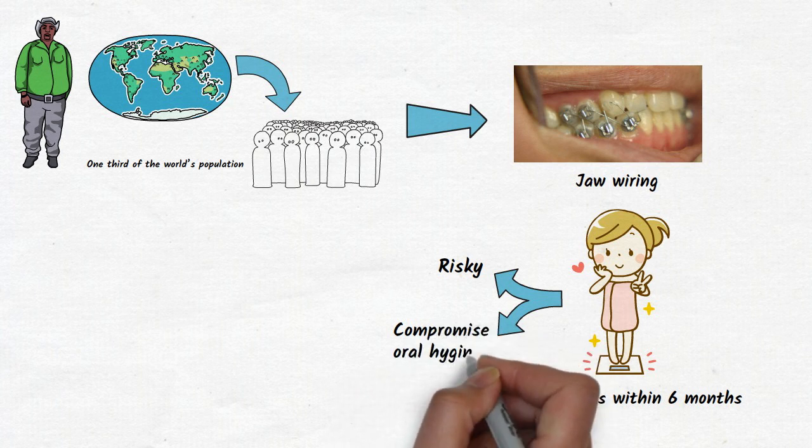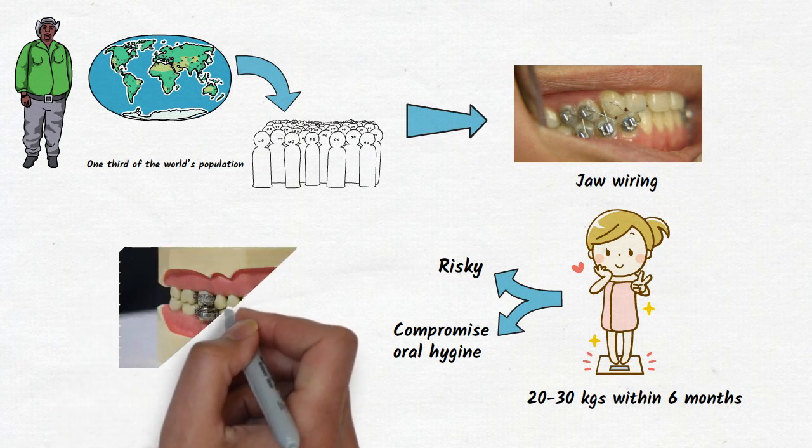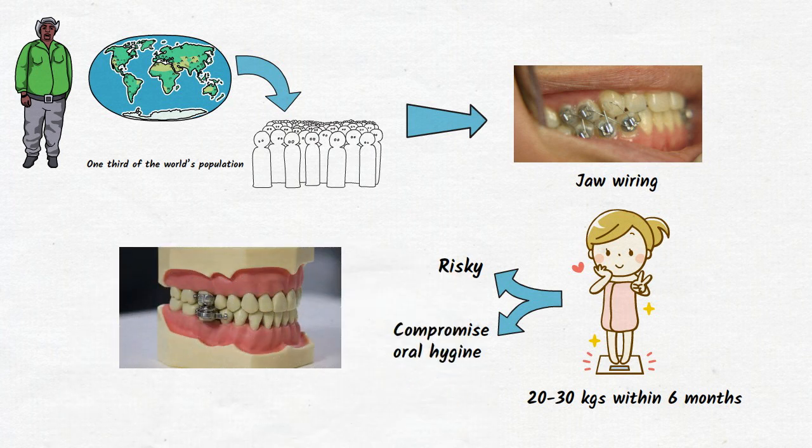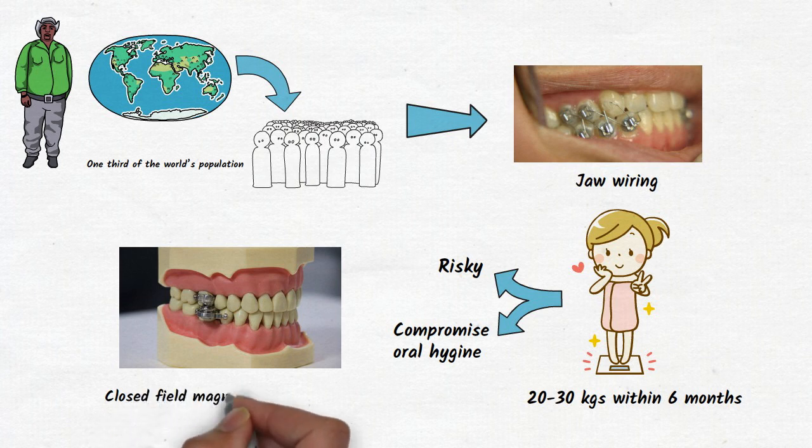The new weight loss intraoral device was made up of closed field magnets with keepers to restrict mouth opening. This device can be cemented on your first molars.